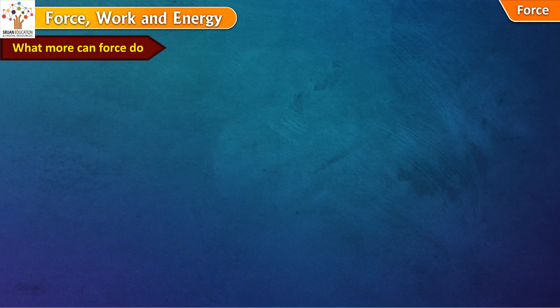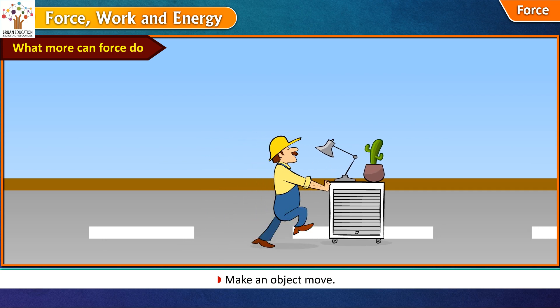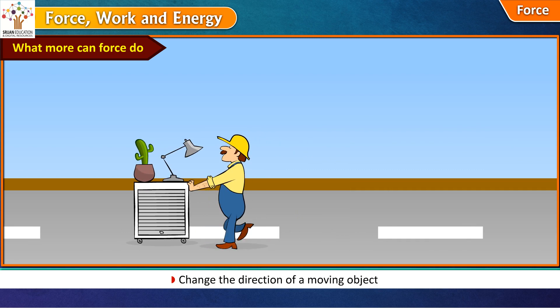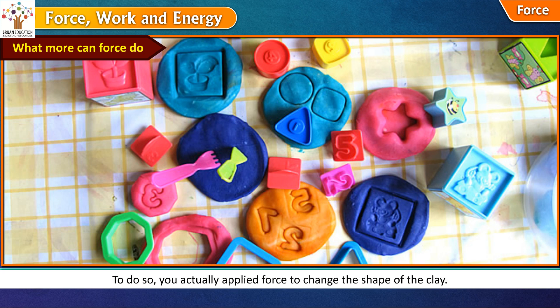What more can force do? A force can make an object move, stop a moving object, change the direction of a moving object. Force can also change the shape of an object. What happened when you rolled the clay between your hands? Could you give it the desired shape? To do so, you actually applied force to change the shape of the clay. So, different shapes can be made by applying force on the clay.